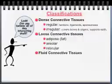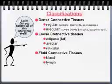There are also fluid connective tissues. When we talk about connective tissues, it's not necessarily directly connecting one thing to another. Blood connects every other cell of your body with your lungs to bring gases back and forth, and lymph is another type of fluid connective tissue.